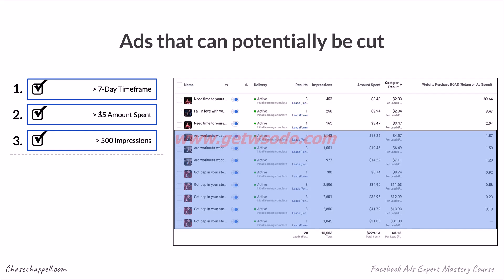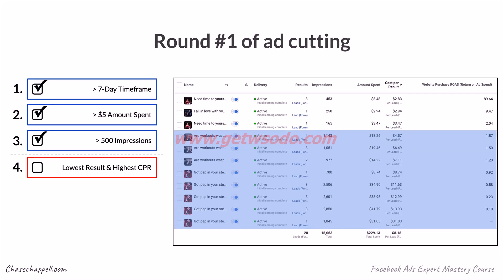The first round of cutting is lowest results and highest cost per result. In this case, one ad has only one result — one lead — at $31 per lead. Looking at all other ads, some have three results, some four, some two — all pretty much more than one. Even the other ads with one lead cost far less, about three times less than this one. This ad has the lowest results, highest cost per result, and significant spend with few leads and lots of impressions. It's clearly not performing, so we cut it.